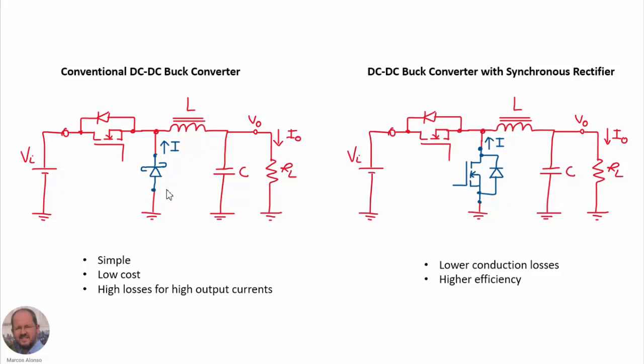So one solution to this problem, or to increase the efficiency of the converter, is to use the DC-DC buck converter with a synchronous rectifier. In this case, we substitute the diode by another MOSFET, so that the conduction losses in this device are going to be lower compared with the Schottky diode, and we are going to get a higher efficiency. Let's see how we can do this.